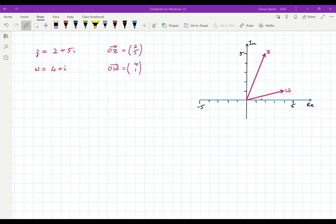There it is, along 2, up 5. As far as the Argand diagram is concerned there's no difference between the complex number 2 plus 5i and the vector 2, 5.